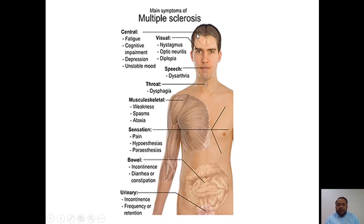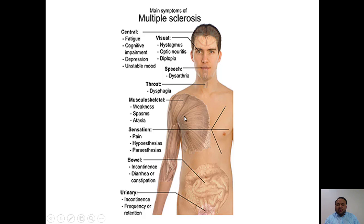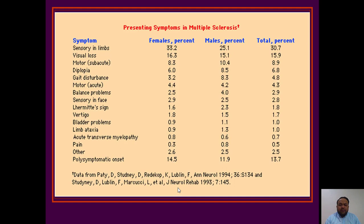Multiple sclerosis is a difficult diagnosis because patients can present with any symptom from top of the head to the big toe. For example, central symptoms include fatigue, cognitive decline, depression, and unstable mood. Visual or speech disturbances, difficulty swallowing, musculoskeletal weakness, spasms, or ataxia may occur. Sensory disturbances such as numbness of a part of the body, or bowel and bladder incontinence may also occur. The most common presentation is sensory disturbances in the limbs — numbness and tingling. Visual loss is the second most common presentation.